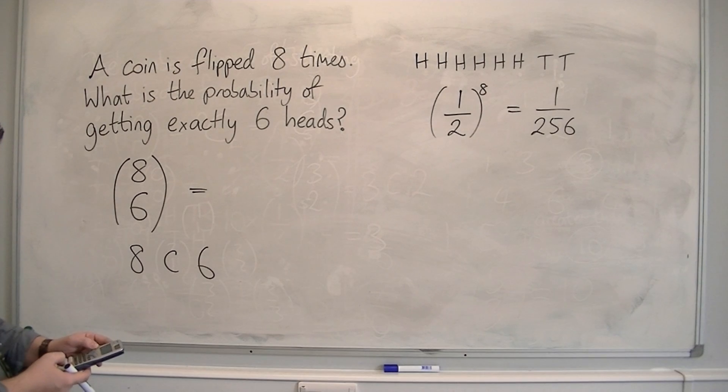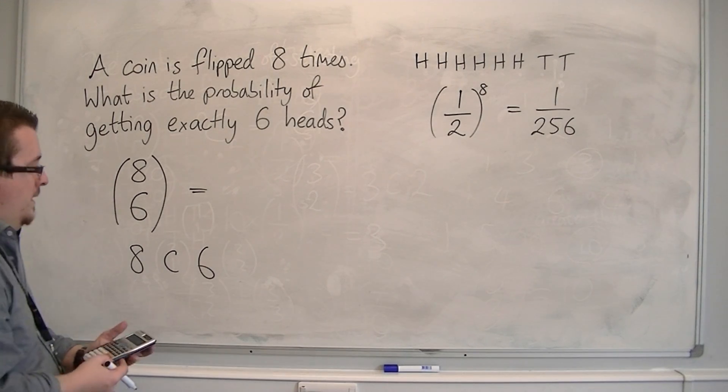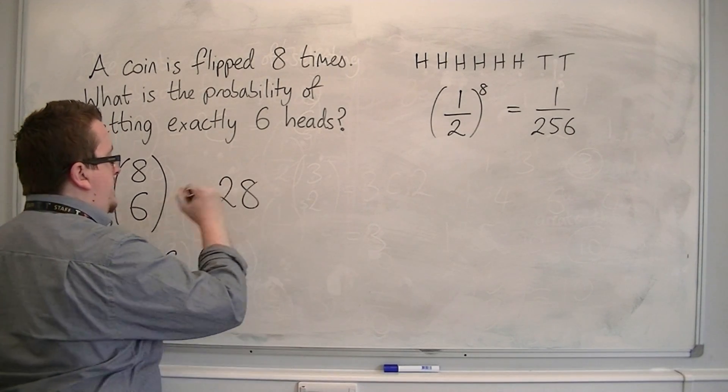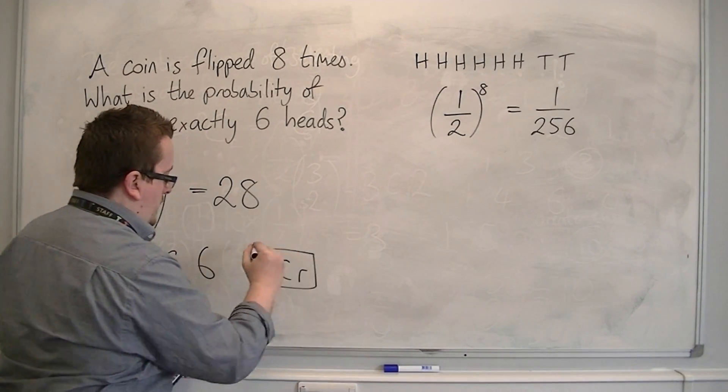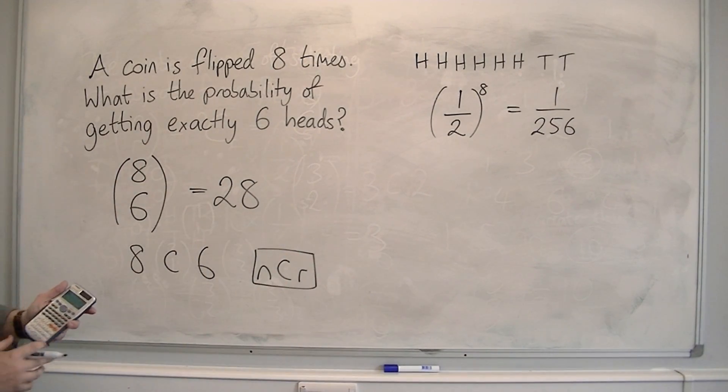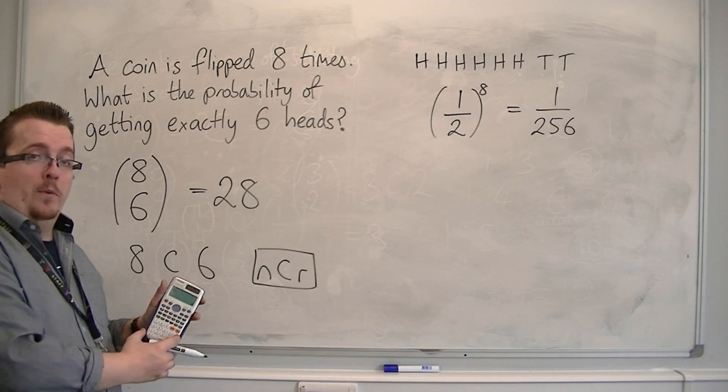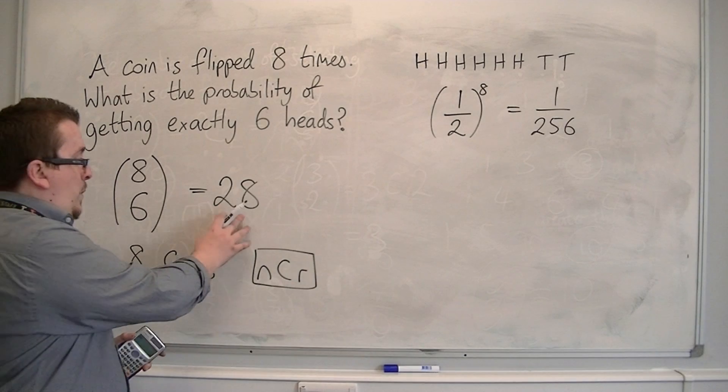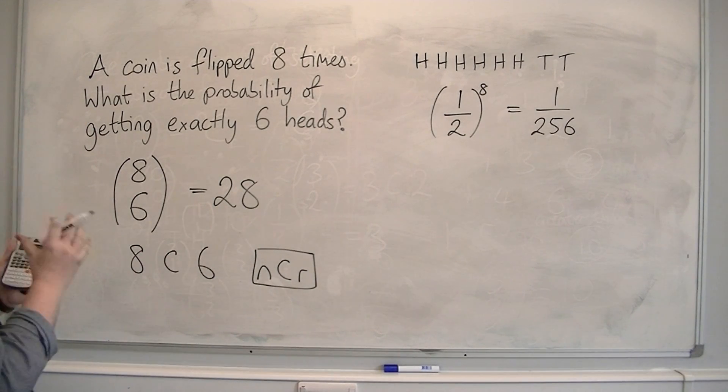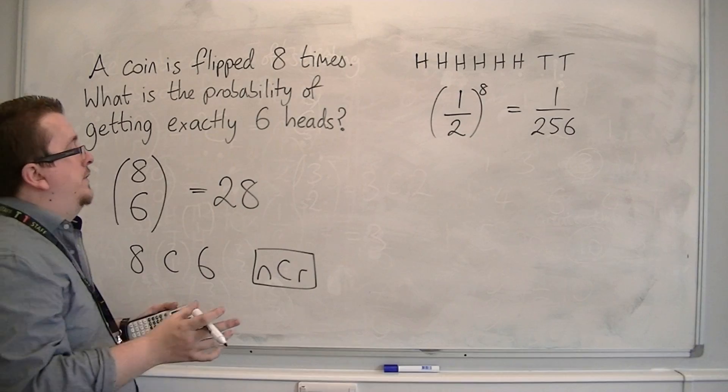So 8 NCR 6, and that's equal to 28. So this is using the NCR button. And you could find that on a Casio just above the division symbol. So you've got to press shift first, then the division symbol. So there are 28 possible ways of getting 6 heads out of 8 coins.